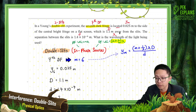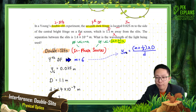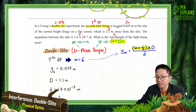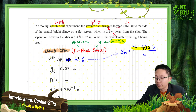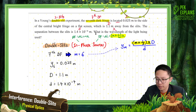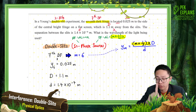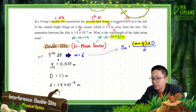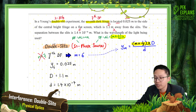Now, 7th dark fringe - what is the order? We need to know what is the order for the 7th dark fringe. Is it 7th order? No. 7th dark fringe is not 7th order, because for double slit dark fringe, it's M plus 1 - it does not follow order.